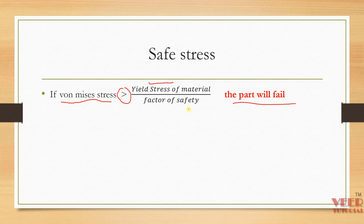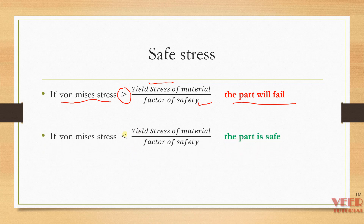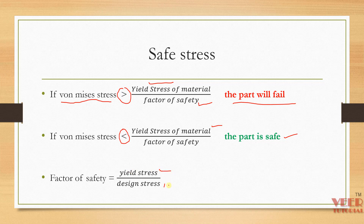To add more safety to a part, we introduce an additional quantity called the factor of safety. If the Von Mises Stress is less than the yield strength of the material, the part is safe. The factor of safety is defined as the ratio between the yield stress and the design stress — yield stress being the maximum breaking stress, and design stress being the stress for which we design the component. Generally, for automobile components, the factor of safety is around 1.2 to 1.3.